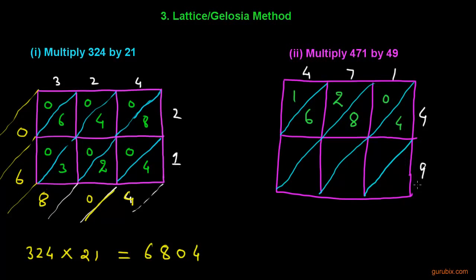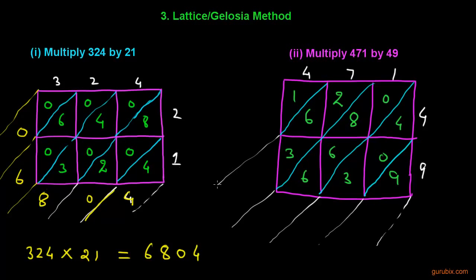1 times 9 is 9; 7 times 9 is 63 — write 63 in the box; 4 times 9 is 36 — write 36 in the box. Now we start adding diagonally.